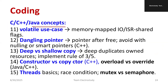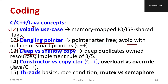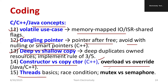Coming to C++ or Java concepts, you may get questions on volatile — its use case relates to memory mapping. Similarly, dangling pointer — pointer after free — avoid with nulling or smart pointers. Deep versus shallow copy: know the major difference. Similarly, constructor versus copy constructor. You should talk about overloading and overriding in Java and C++ since both are object-oriented programming concepts. Go through thread basics as well. These are a few more important questions.